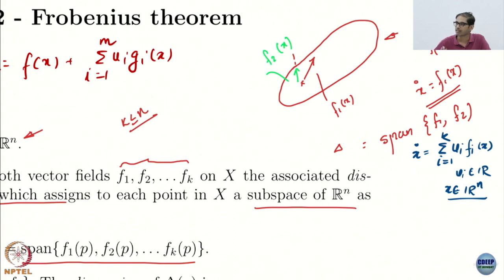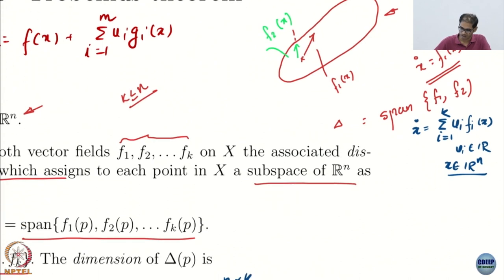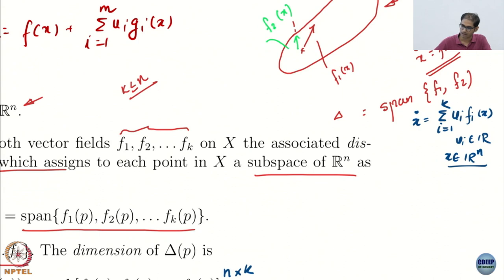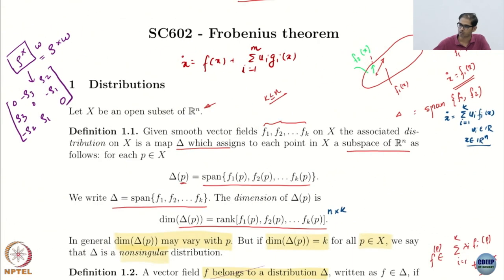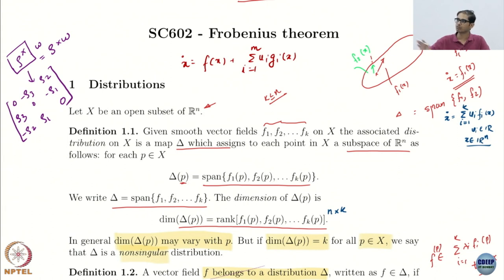You cannot move anywhere else — that is the whole relevance of talking about distributions. This is dictating the velocity, so instantaneously you can only move in that direction. You cannot move in any arbitrary direction.